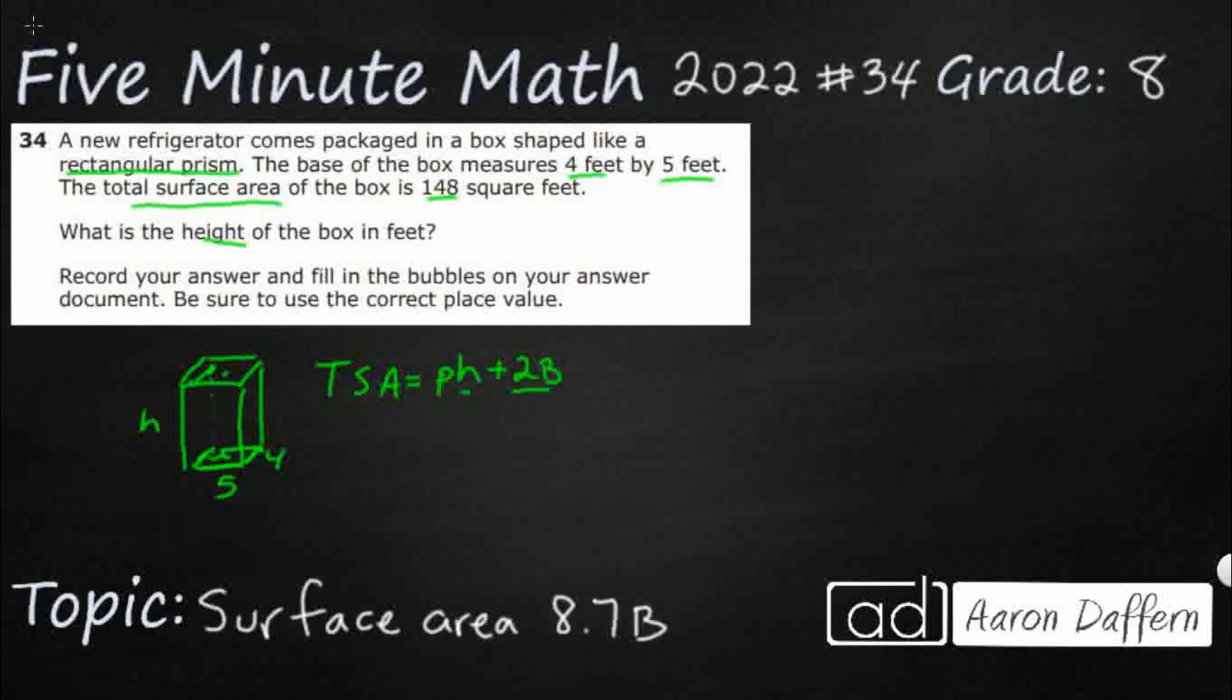So our total surface area is 148. All right, so we're going to have to solve for this H here. Perimeter, well, the perimeter is just adding up all four sides, right? So perimeter equals double the length, double the width. So that's going to equal 2 times 5 plus 2 times 4.